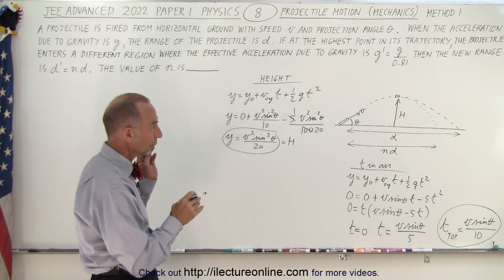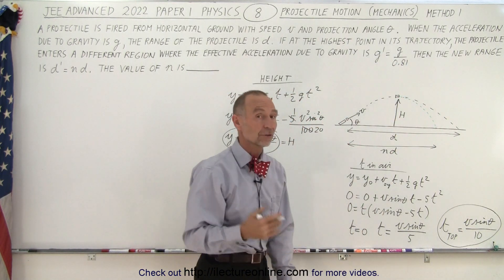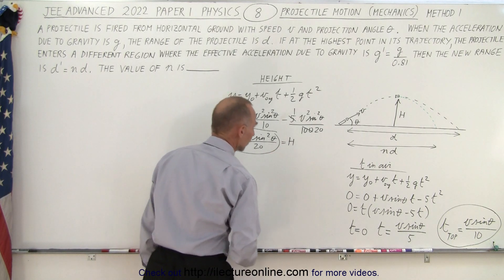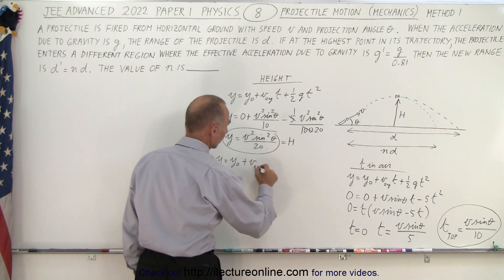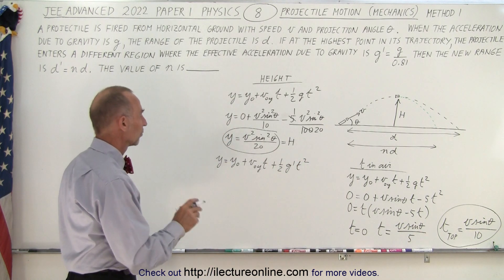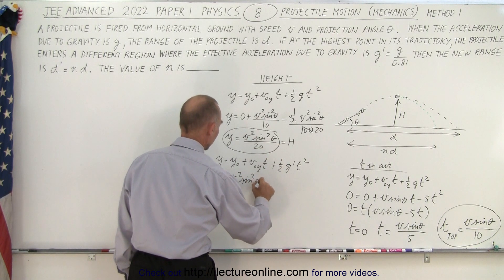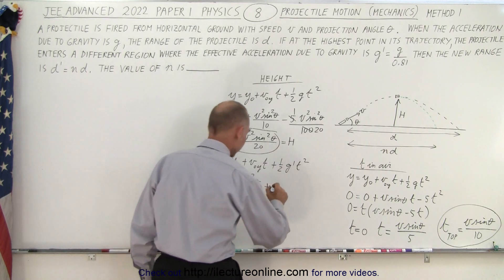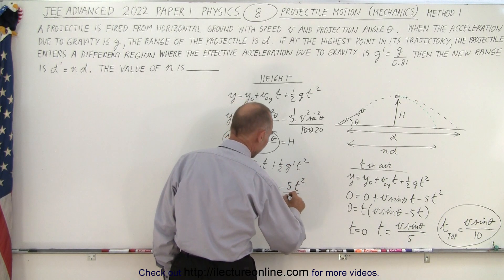Now that the projectile is at height H, it enters the region where gravity is now larger — g divided by 0.81 — so it will come down faster. Using the kinematic equation again for the second phase: y = y₀ + v₀y·t + ½·g_new·t². The final height is 0, the initial height is v²·sin²(θ)/20, the initial velocity in the y-direction is 0 (at maximum height), and the gravity term becomes minus 5t²/0.81.